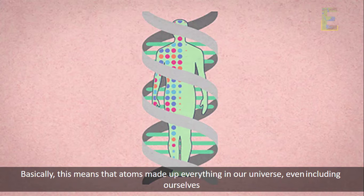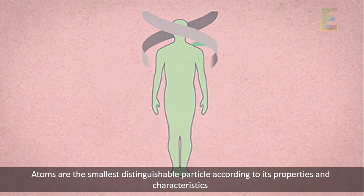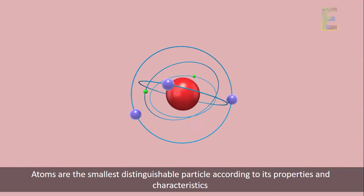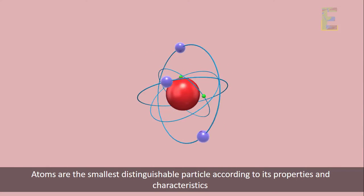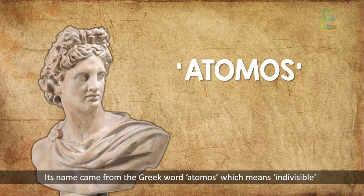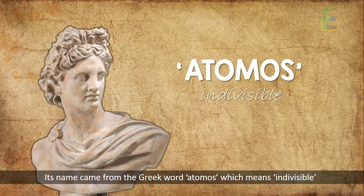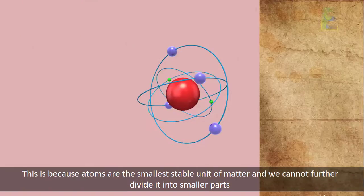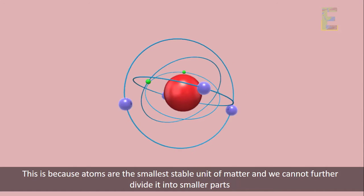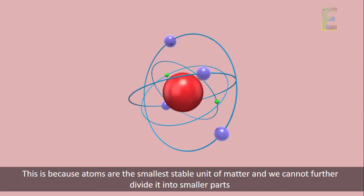Atoms are the smallest distinguishable particle according to its properties and characteristics. Its name came from the Greek word atomos, which means indivisible. This is because atoms are the smallest stable unit of matter and we cannot further divide it into smaller parts.